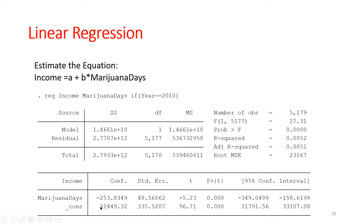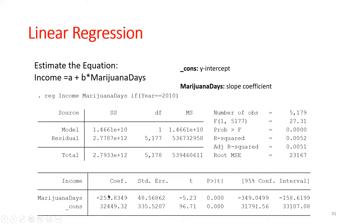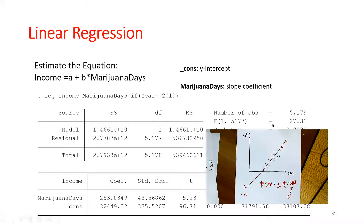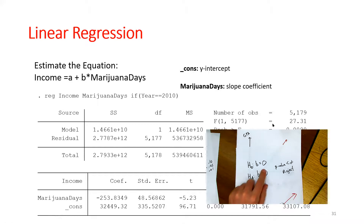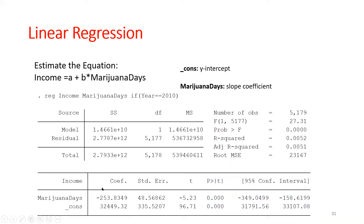So I have the intercept coefficient, the slope coefficient for my X variable, their standard errors, test statistics, and p-values — those first four columns are all I need. Using marijuana one additional day a month would predict that income goes down by $253. The intercept: if someone uses marijuana zero days a month, the predicted income would be $32,449. P-values of zero mean I can reject the null hypothesis that the slope equals zero.